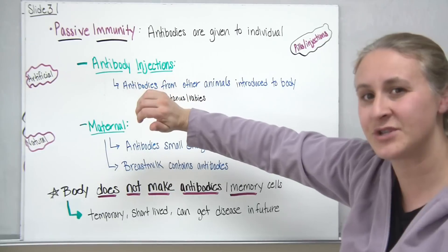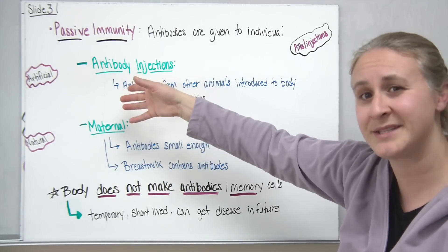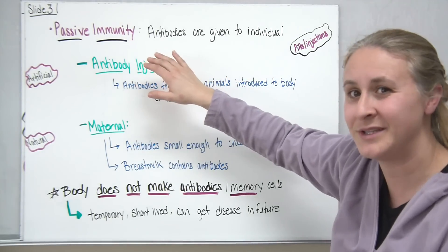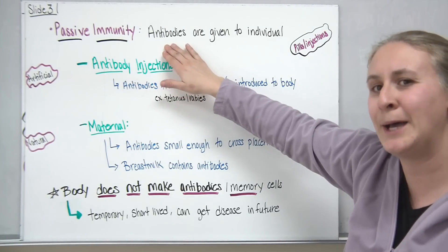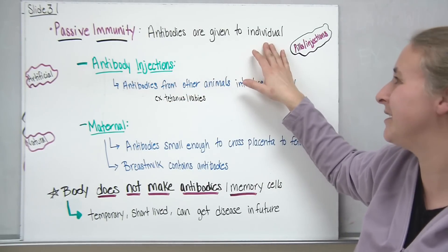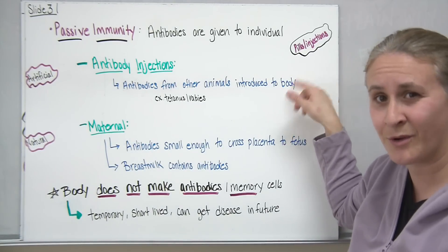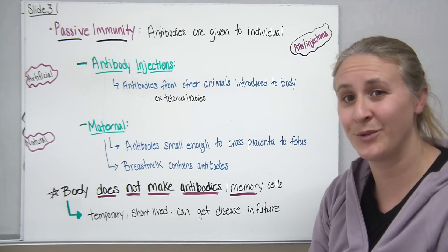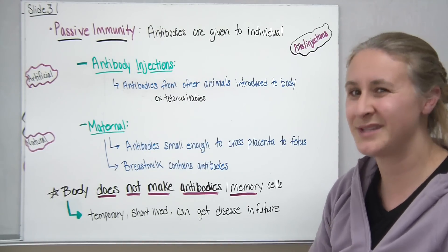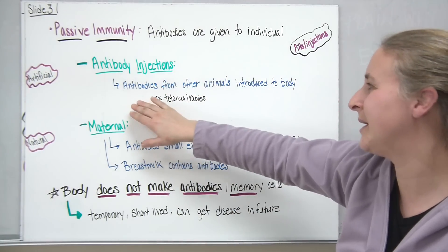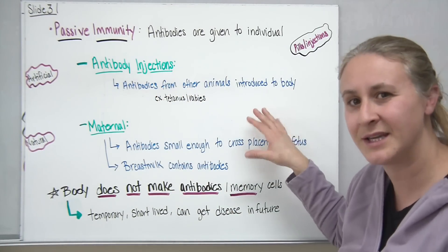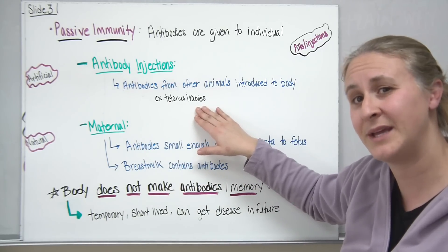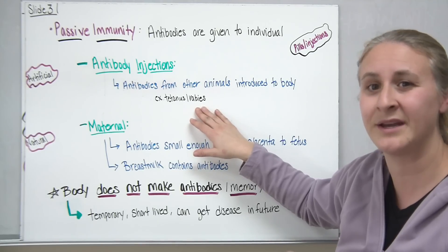Passive immunity is a little different. Similar to passive transport — which doesn't use energy — with passive immunity your body doesn't actually do the work to get the immunity. Instead, you receive antibodies from another individual through an injection or pills containing antibodies that another organism made, so your body didn't go through the work of making them and doesn't really know how to make them again.